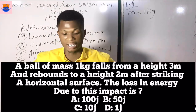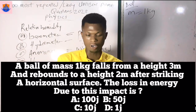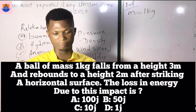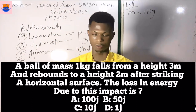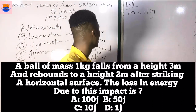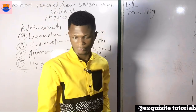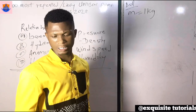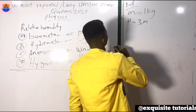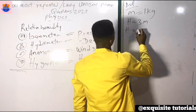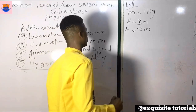Question 12: A ball of mass 1 kg is dropped from a height of 3 meters and rebounds to a height of 2 meters after striking the horizontal surface. The loss in energy due to this impact is what? Options: A — 100 joules, B — 50 joules, C — 10 joules, D — 1 joule.